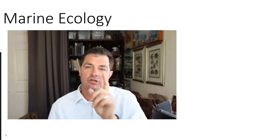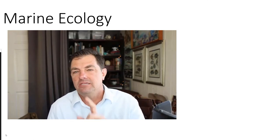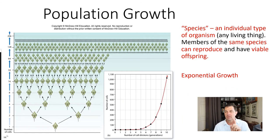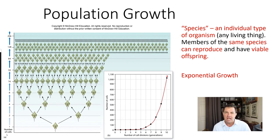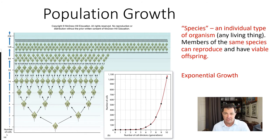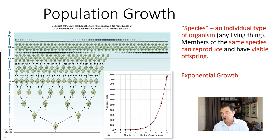Hi everybody, today we're going to be talking about marine ecology. First, let's talk about population growth. When we talk about a particular species, that is an individual type of organism, and an organism is any kind of living thing. Members of the same species can generally reproduce and have viable offspring, meaning those offspring can then themselves reproduce.